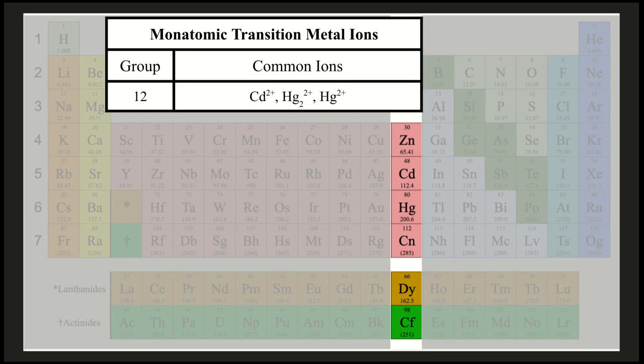Cadmium often comes with a 2-plus. And mercury is a little interesting here. Technically, this one is mercury with a 1-plus charge, but it doesn't come by itself when it has a 1-plus charge. It comes in a group of 2, so together that would be a 2-plus charge. Or mercury can come on its own and have a 2-plus charge.